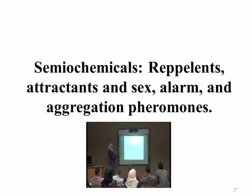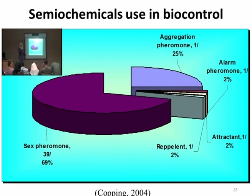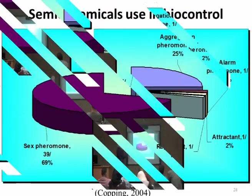Semiochemicals include repellents, attractants, and alarm pheromones. The most used are sex pheromones — one insect calls all others, either to signal a food source, a gathering event, or a specific activity. Aggregation pheromones gather the colony, and alarm pheromones warn the insect community of an impending danger, prompting a response. Repellent pheromones drive insects away.